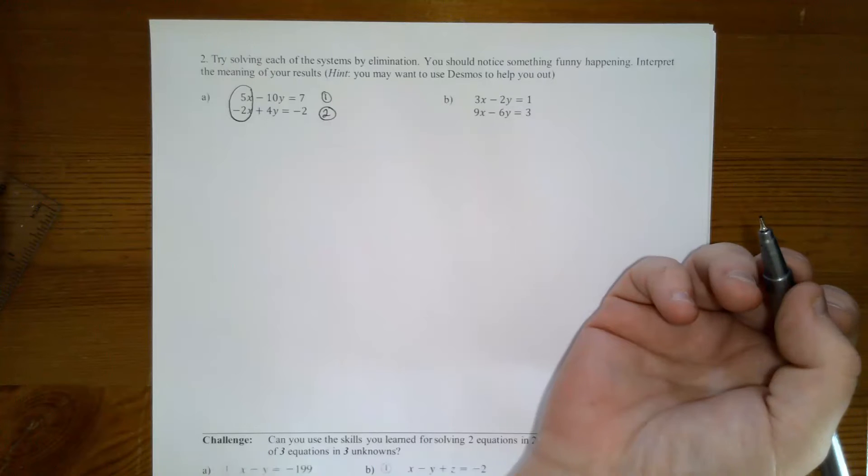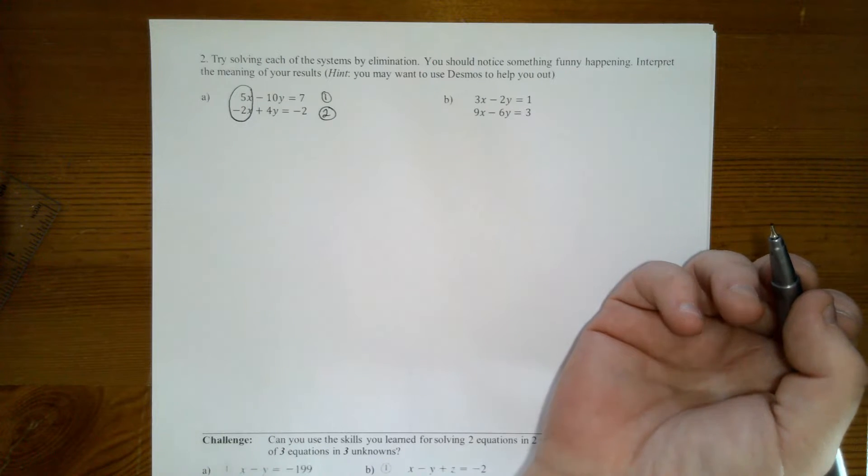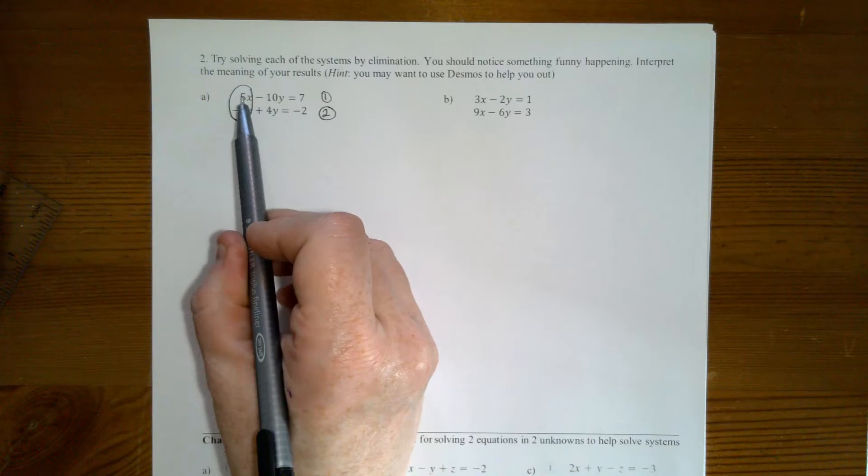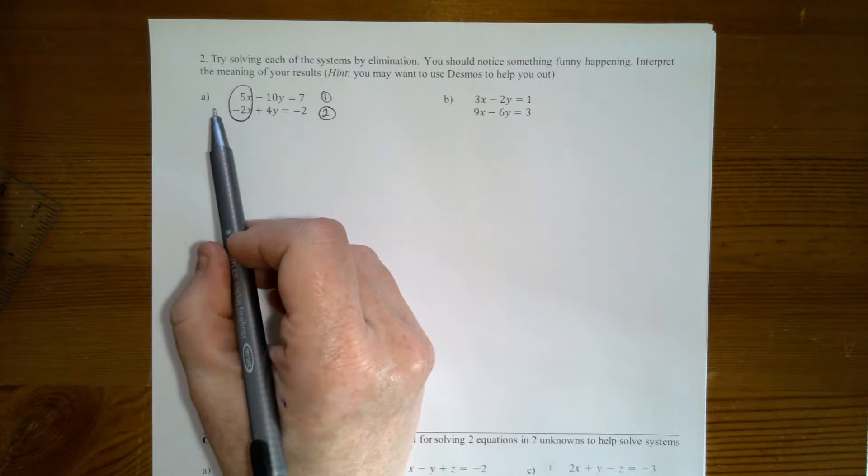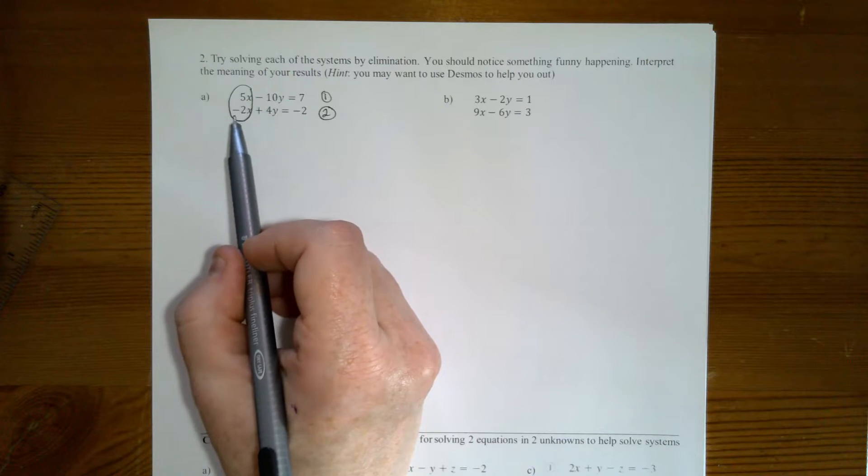The only way I can eliminate it is if the coefficients are the same. Because if I have a 10 and a 10, then I can add them up and get 0. And so this will be gone.